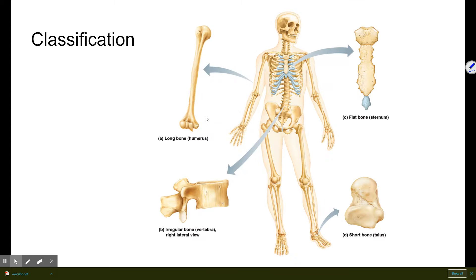The next classification of bones is the shape of bones. There are four different types of bones we're going to look at. The first one is long bone, which you can see there on A. Long bones are considerably longer than they are wide.